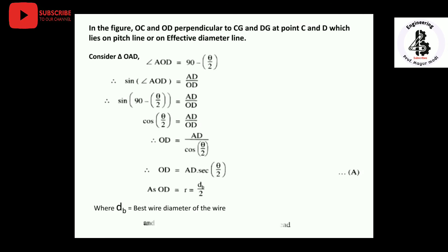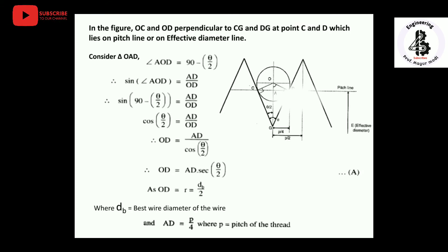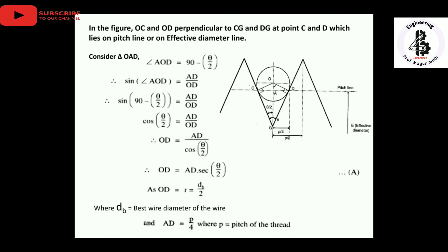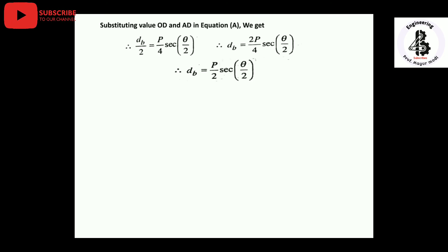The value of AD, derived with respect to the pitch, is equal to P/4. Substituting the values of OD and AD into equation A, we get: DB/2 = (P/4) · sec(θ/2). Simplifying this, we finally get: DB = (P/2) · sec(θ/2). This is the equation used for the best wire size method to measure the effective diameter.